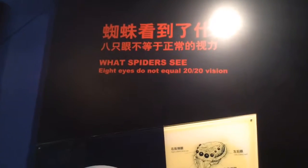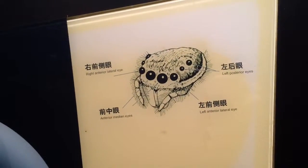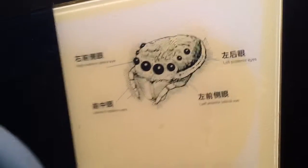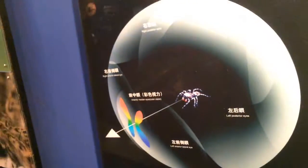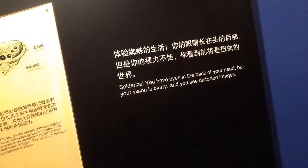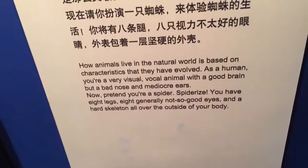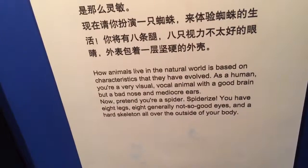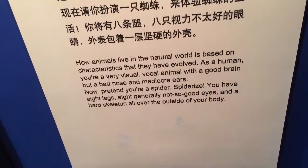What spiders see: eight eyes do not equal 20/20 vision. Only the two main eyes detect color and sharp images; the other six function like peripheral vision. As a human, you're a very visual, vocal animal with a good brain but a bad nose and mediocre ears. Now pretend you're a spider: you have eight legs, generally not-so-good eyes, and a hard skeleton all over the outside of your body.